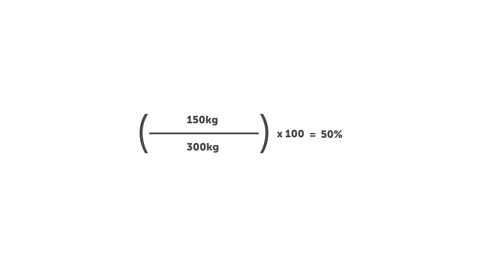Let's take a look at another example with the same car, where the front axle instead transfers 165 kg and the rear axle 135 kg. Plugging these numbers into the same equation, we can see this results in 55% — the front axle is accounting for 55% of the total lateral load transfer.